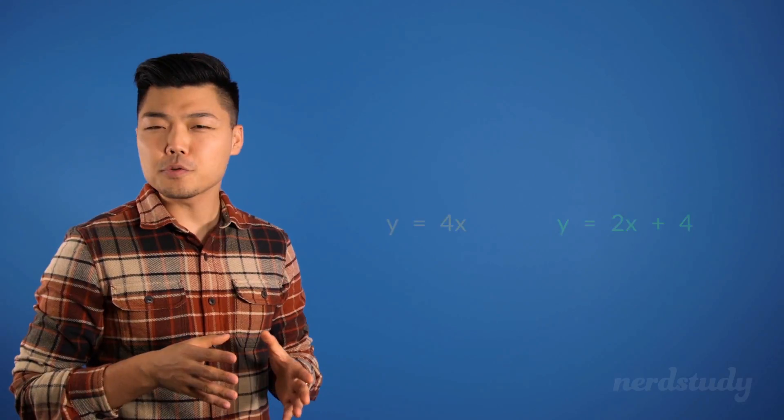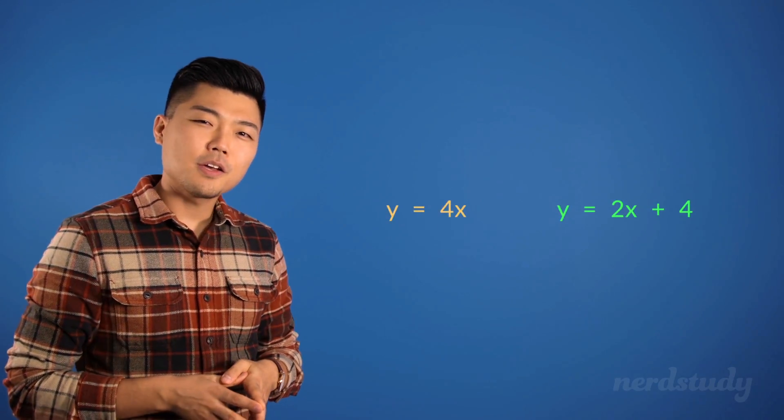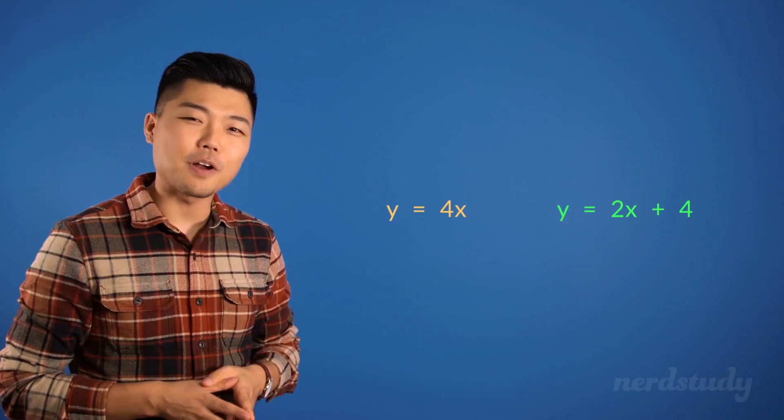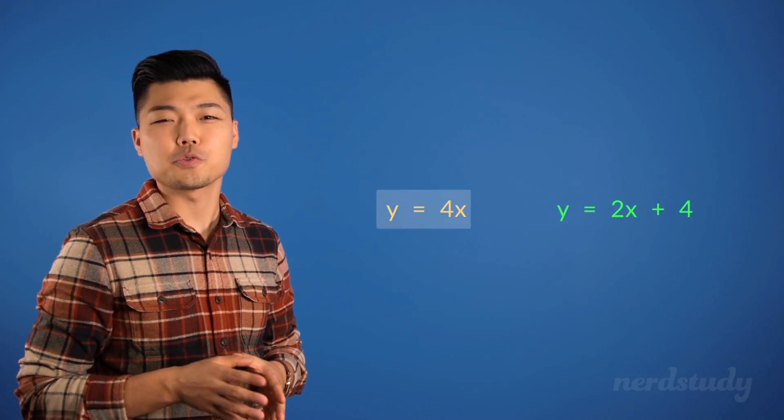Let's imagine that there are two runners. One of them is me and the other is you. We can represent this by using two different linear equations. This one shows my running graph and this one shows yours.